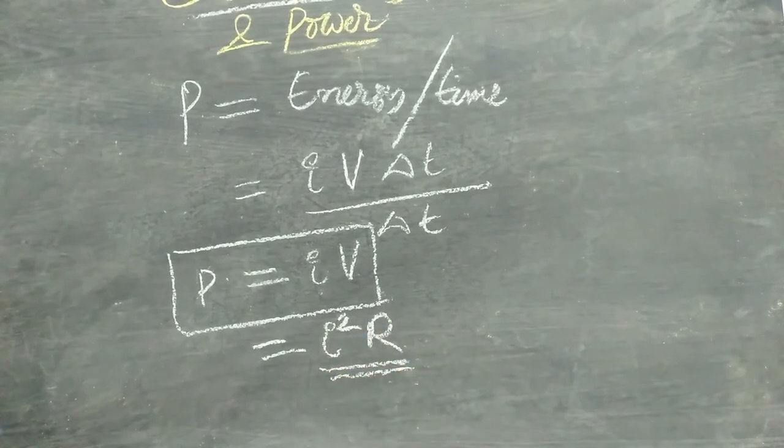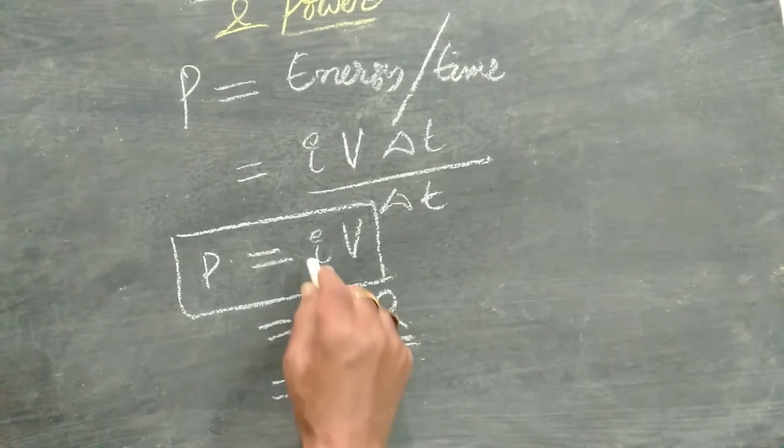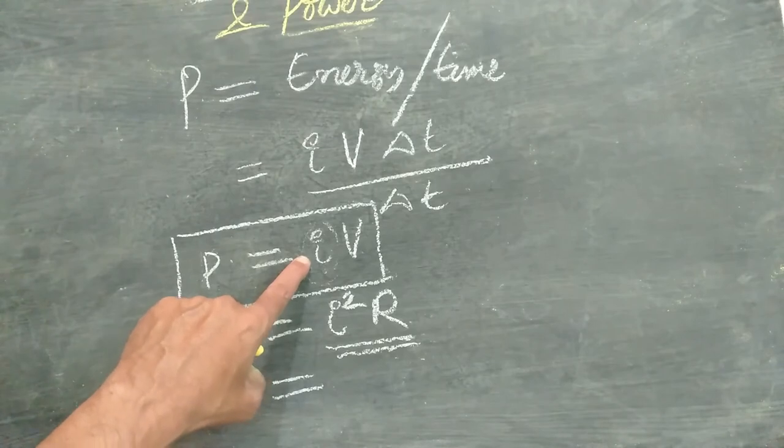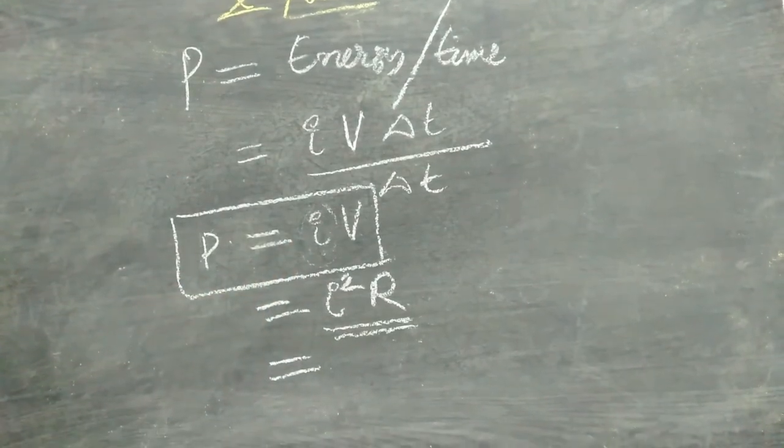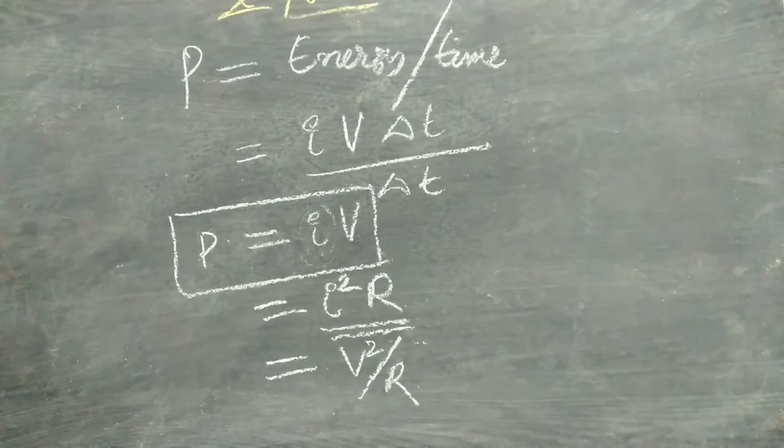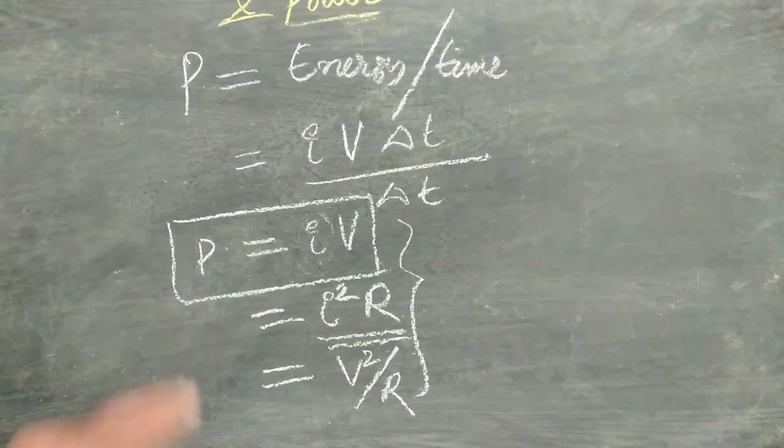This is another formula for power. Now I can also write with the help of Ohm's law I is equal to V by R. In that case, V times V will be there in the numerator and R is in the denominator. So these are the three different formulae for power.